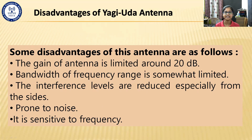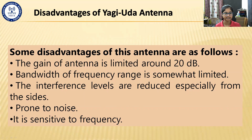Disadvantages of the Yagi-Uda antenna. The gain of the antenna is limited to around 20 dB — meaning it cannot exceed 20 dB. The bandwidth of frequency range is somewhat limited, giving you a certain coverage area and not more. The interference levels are reduced, especially from the sides — the more you increase the number of directors, the more the interference level reduces. It is also prone to noise and is sensitive to frequency.